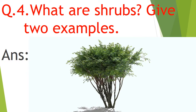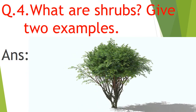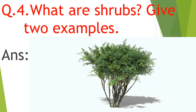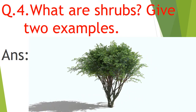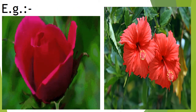Question number four: what are shrubs? Give two examples. Small plants with woody stems are called shrubs. Here you can see in the picture it is a small plant and it has a woody stem. Small plants with woody stems are called shrubs. Example: rose, hibiscus.